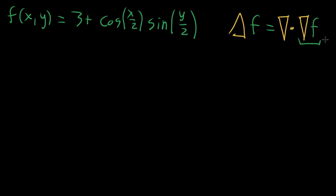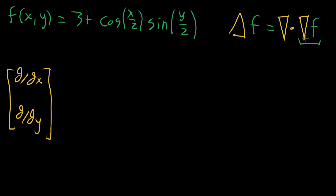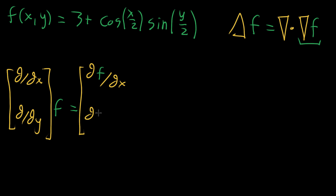The first thing we need to do is take the gradient of f. We imagine expanding this upside-down triangle as a vector full of partial differential operators — partial x and partial y. With the gradient, you just imagine multiplying that by the function, giving you a vector full of partial derivatives: the partial of f with respect to x, and the partial of f with respect to y. Those are the two components of this vector-valued function that is the gradient.